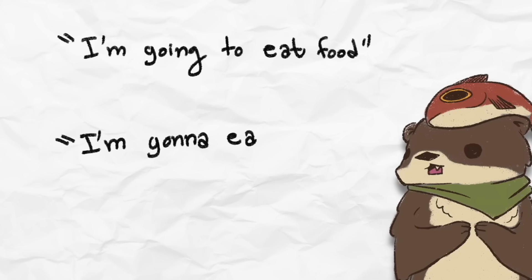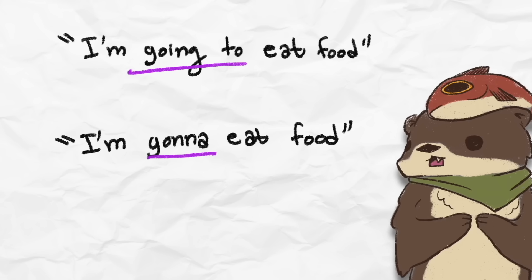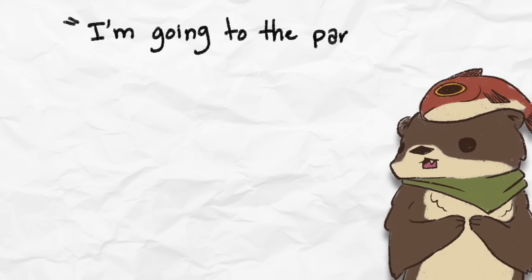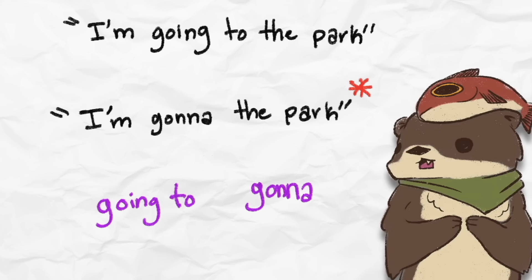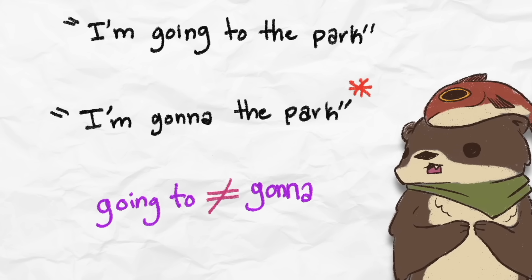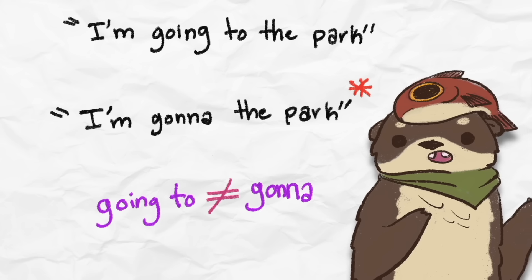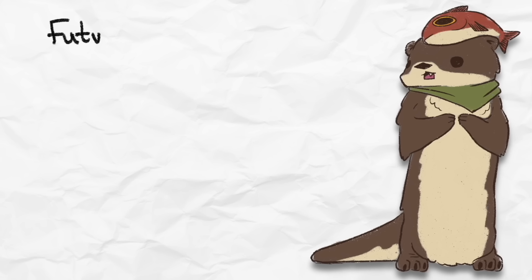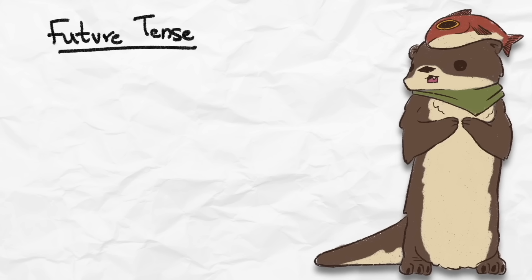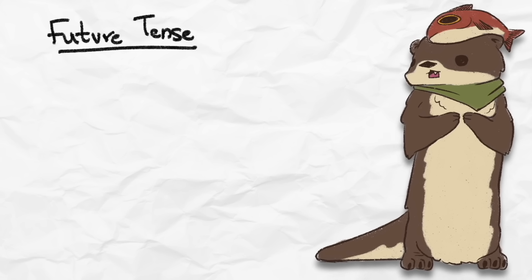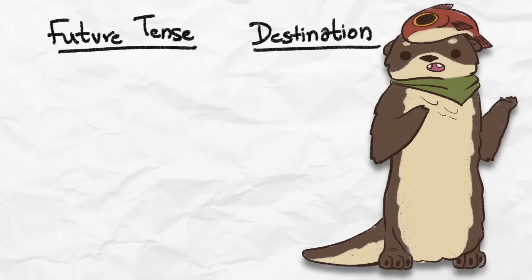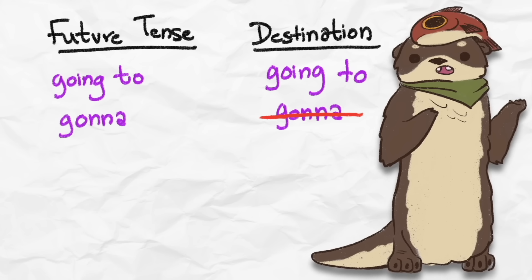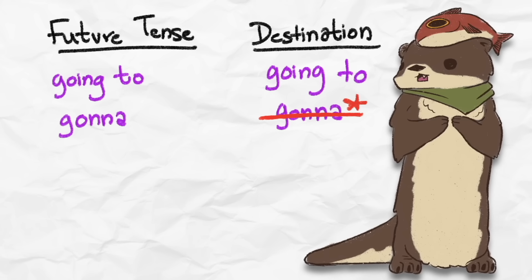Similar to the situation of let's no longer being the exact equivalent of the phrase let us, the shortening of want to, going to, have to, and ought to are not necessarily equivalent to wanna, gonna, hafta, oughta. For example, take the sentences I'm going to eat food and I'm gonna eat food. Here it appears that gonna is just the shortening of the phrase going to, but look at this. I'm going to the park and I'm gonna the park. The second sentence here is ungrammatical, showing that gonna can only be shortened in specific contexts.